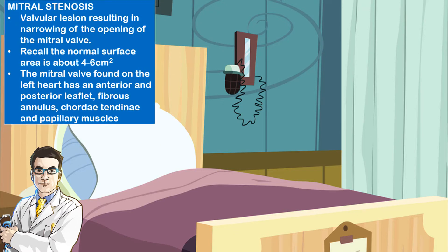Recall that mitral stenosis is a valvular lesion resulting in narrowing of the opening of the mitral valve. The mitral valve has a normal surface area of about 4-6 centimeters squared and is found on the left side of the heart between the left atrium and the left ventricle. It has an anterior and posterior leaflet, fibrosa annulus, chordae tendineae, and papillary muscles.